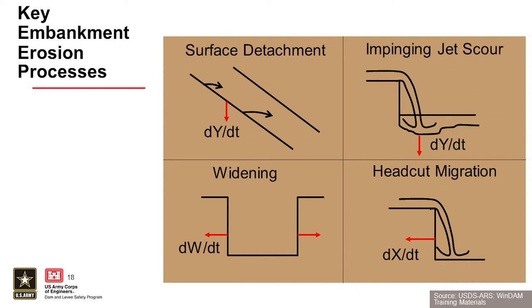There are four primary embankment erosion processes that require modeling, representing the four stages of erosion. The first is surface detachment. The second is impinging jet scour. The third is widening, and the fourth is head cut migration. Surface detachment is the primary driver in all four processes. Impinging jet scour is a function of the peak stress applied by the impinging jet. The rate of widening depends on whether channel surface detachment or head cut migration is occurring. Within a simplified breach model — SIMBA — the rate of widening is dependent on the rate of head cut migration or, if downward channel erosion is occurring, on the hydraulic stress in the bed of the channel.